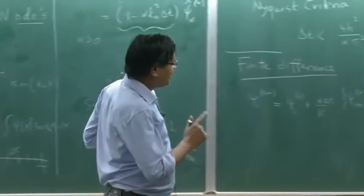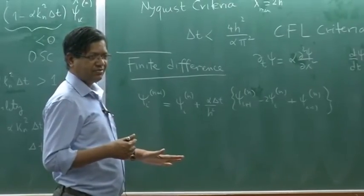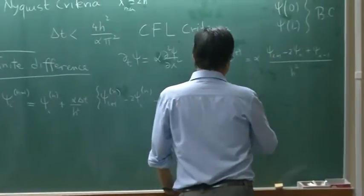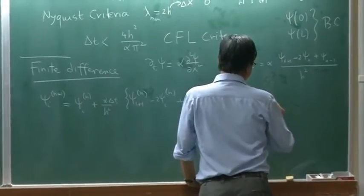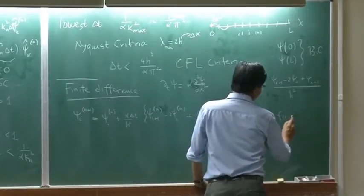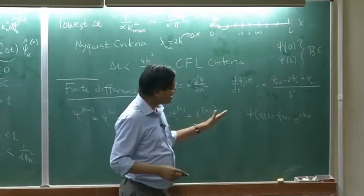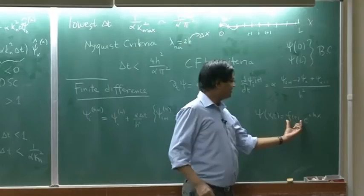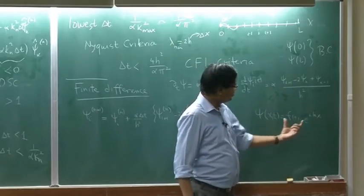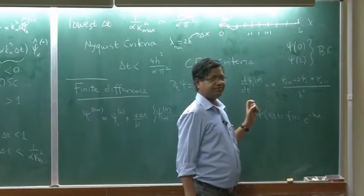To figure it out, let us try putting a trial solution. The trial solution is psi(x,t) equals f(t) times e^{ikx}. This is to test stability — a standard technique. I am going to check whether this amplitude will grow in time, sink in time, or decrease in time. I will plug it in to the equation.